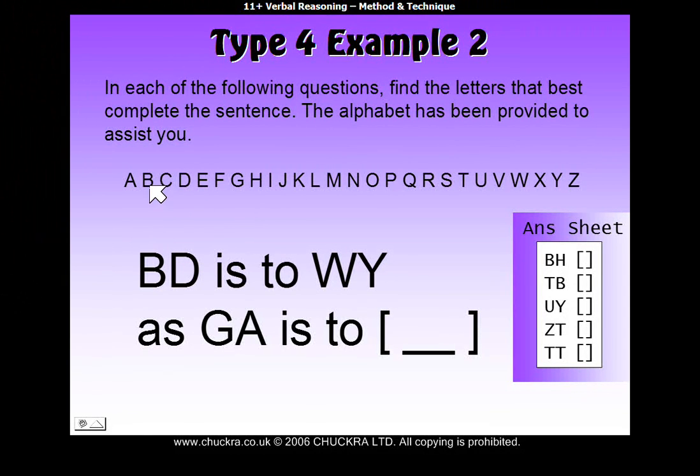To get from B to W, so B back 1, 2, 3, 4, 5, back 5. To get from D to Y, we go back 1, 2, 3, 4, 5, also back 5.